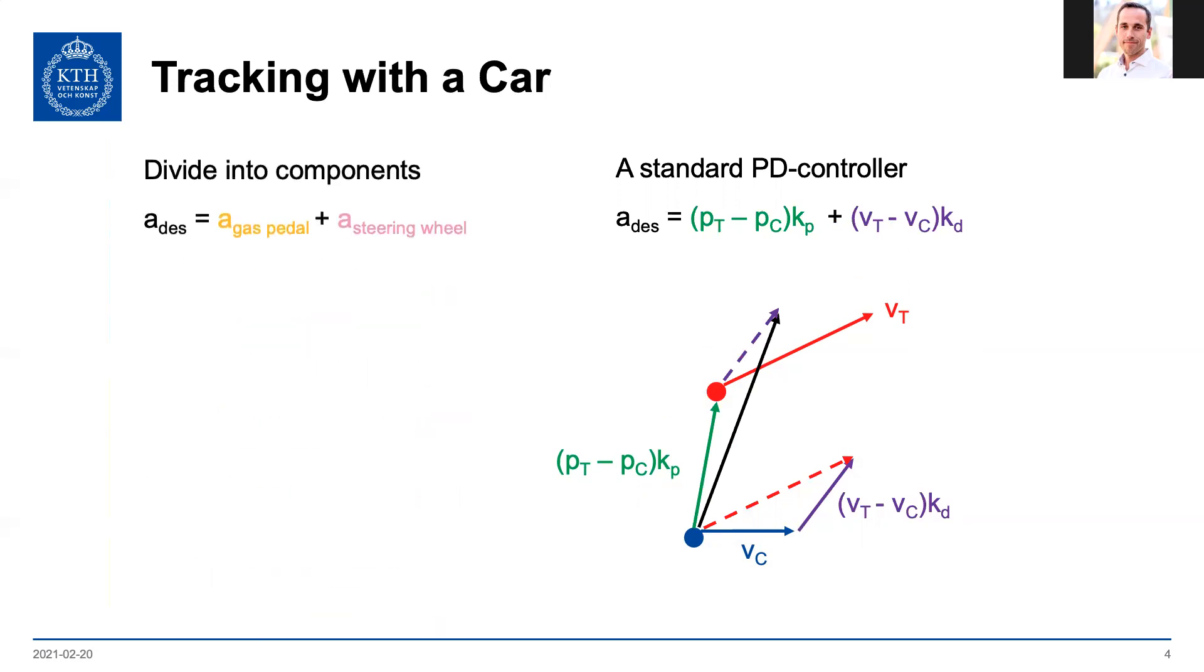So you just need to divide this desired acceleration into components. One that is along the direction that the car is driving, and that is going to be your gas pedal slash brake input. And then along the other direction, which is going to be your steering wheel input. So basically, if the car is driving eastwards like in this example and you want to have a desired acceleration as the black vector, you divide it into the two components of the pink and the yellow. So a bit of acceleration forwards and a lot of steering to the left.